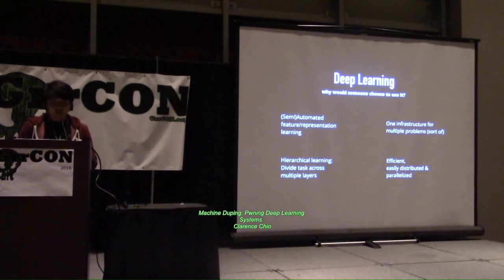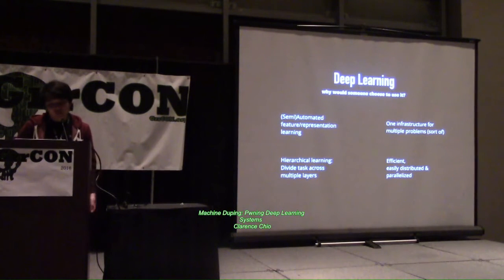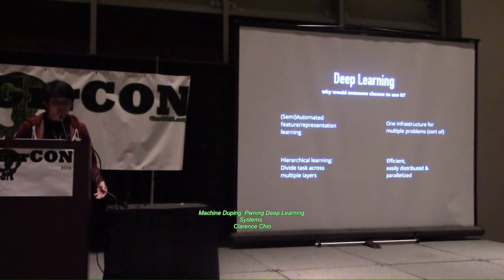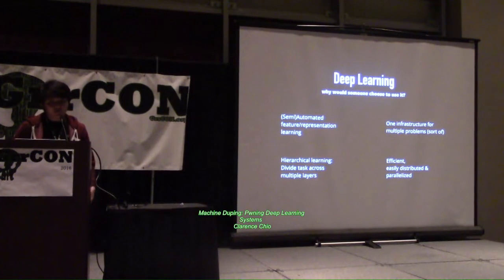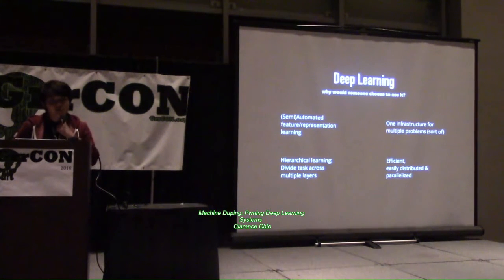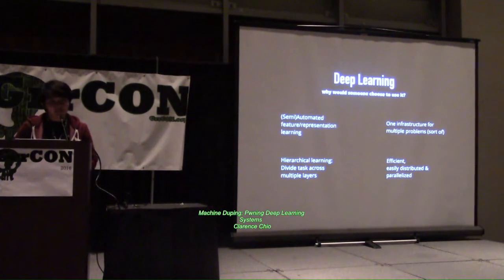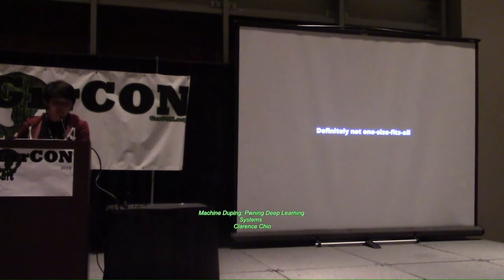There must be decision points in any input that help the model make the same decision a human would — recognizing a 9 because there is a circle on top and a curve on the right. Deep learning also presents one infrastructure for multiple problems. Other machine learning models require different code for different problems, but a multi-layered neural network can solve many different kinds of problems with one piece of code. You can also perform hierarchical learning and distribute workloads across an entire cluster — a benefit over clustering algorithms that cannot be efficiently distributed.